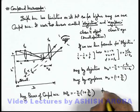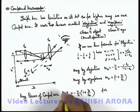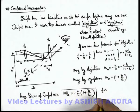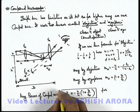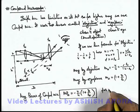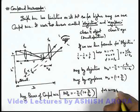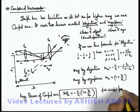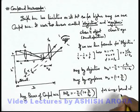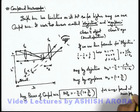This total magnifying power can be written as: M = −(v/u) × (1 + D/f_e), for image produced at the near point.